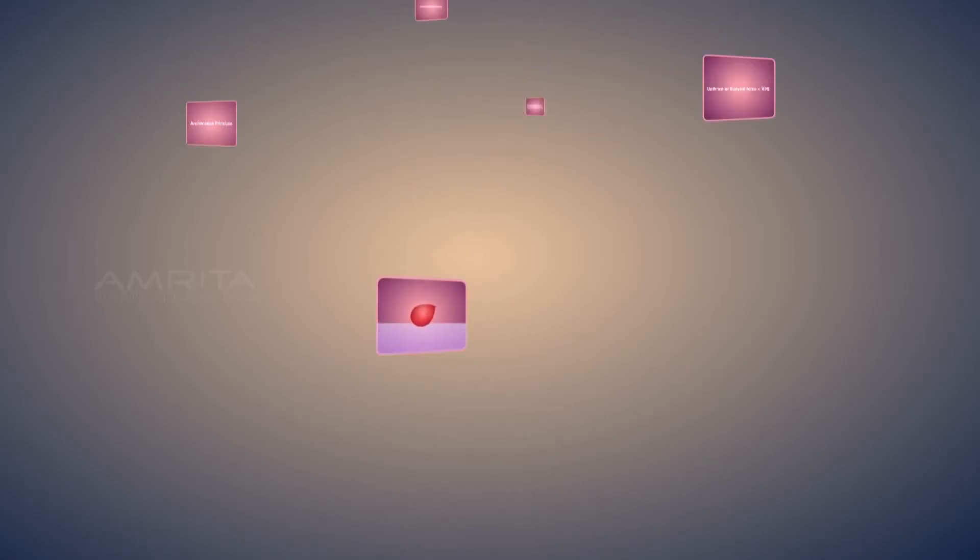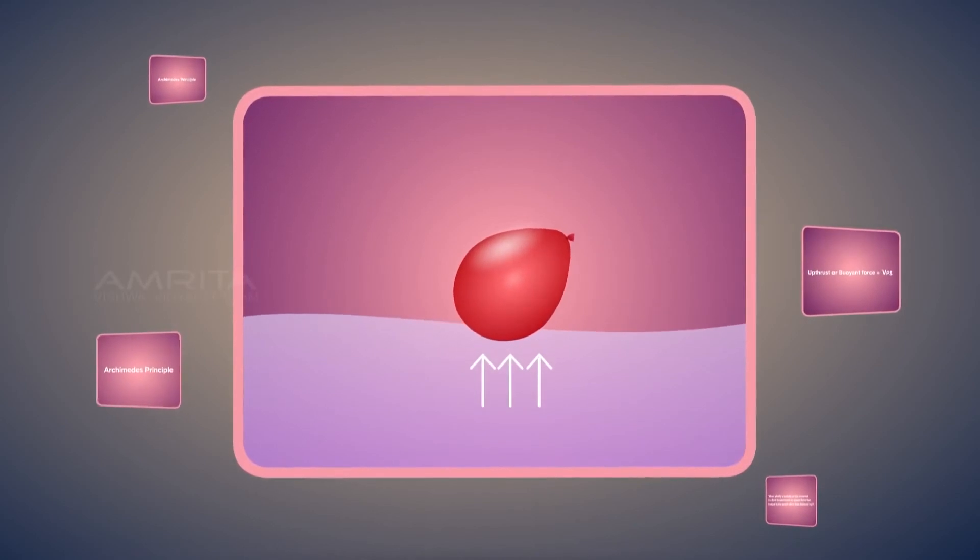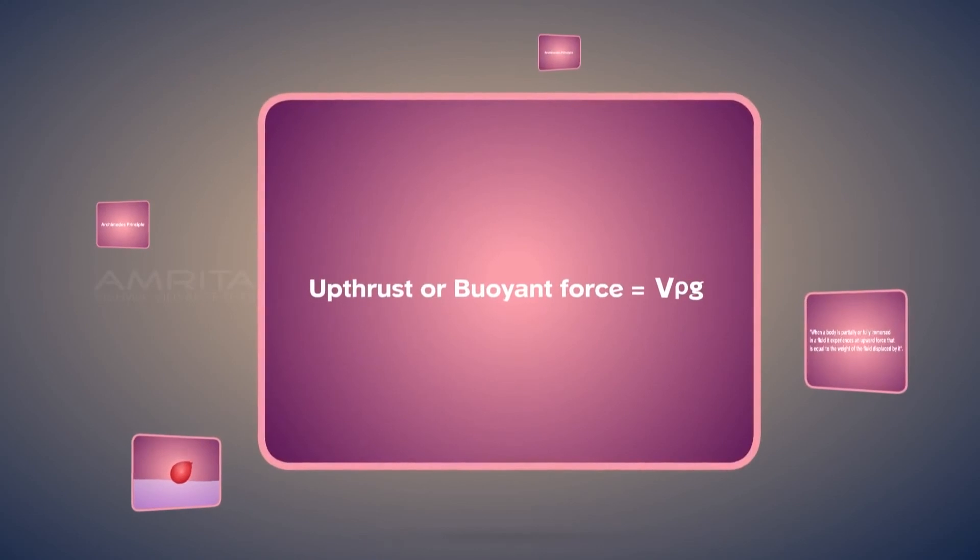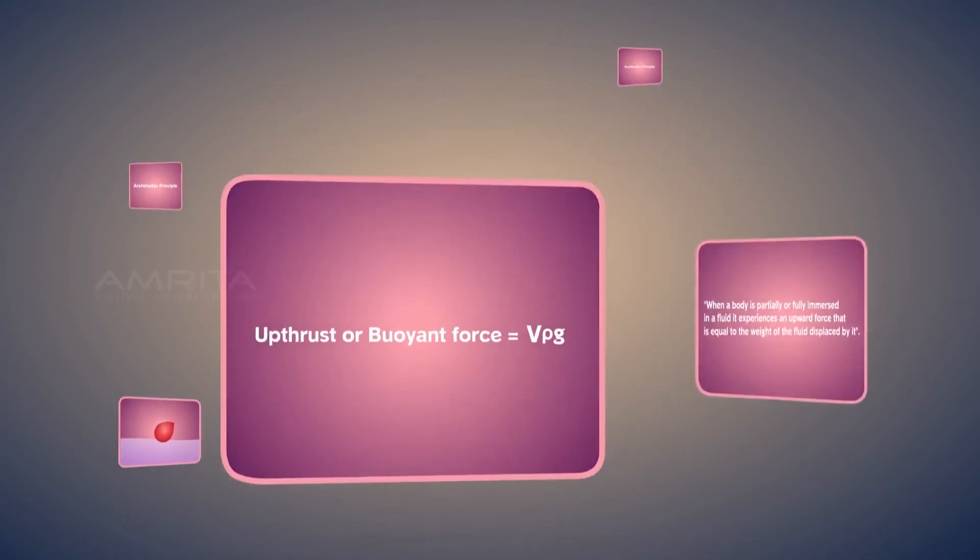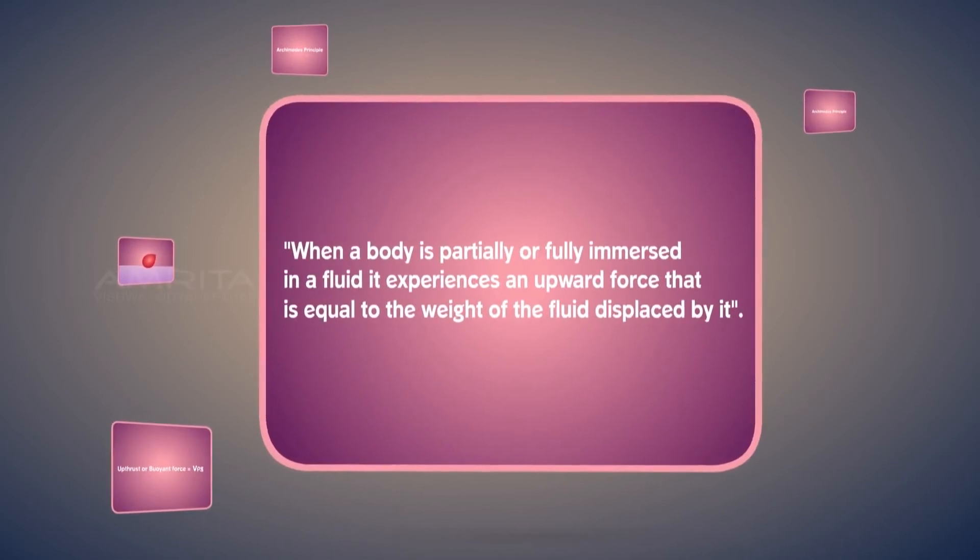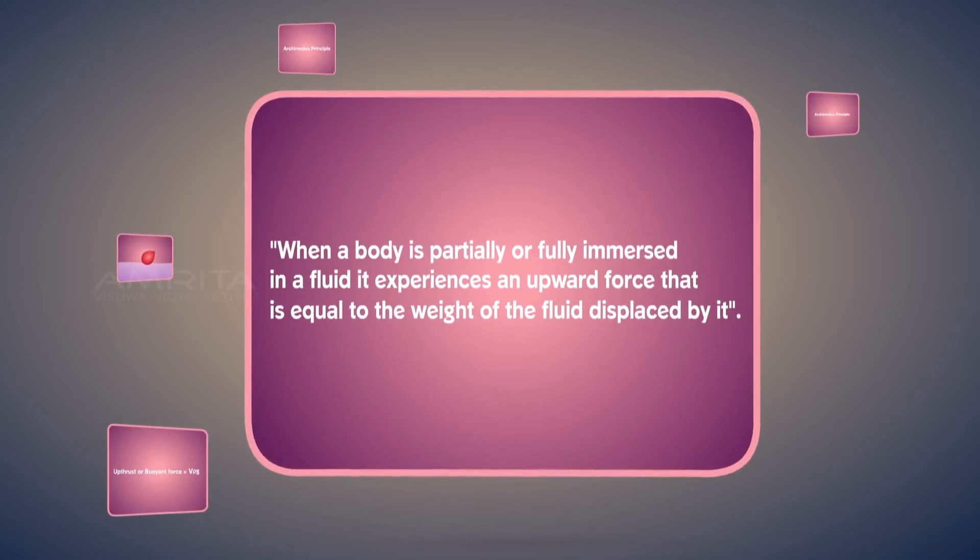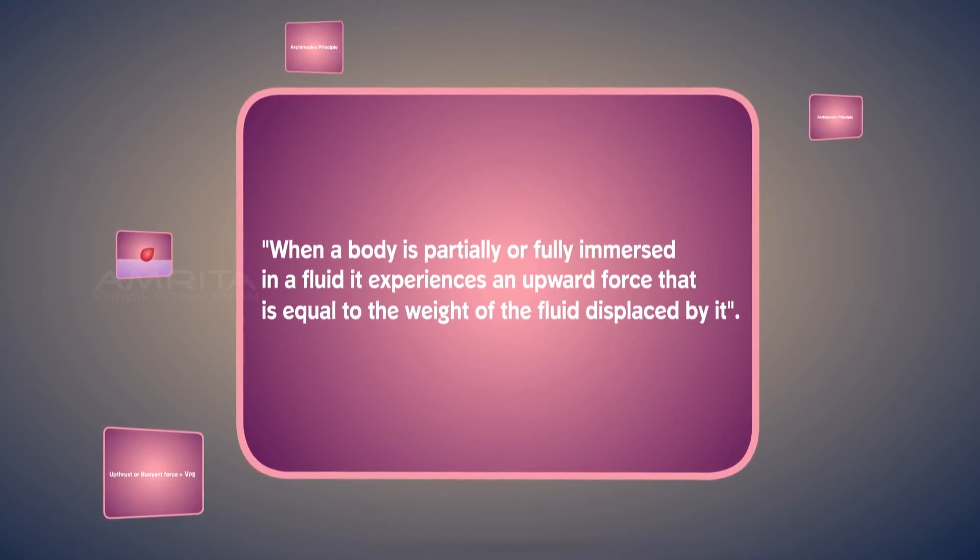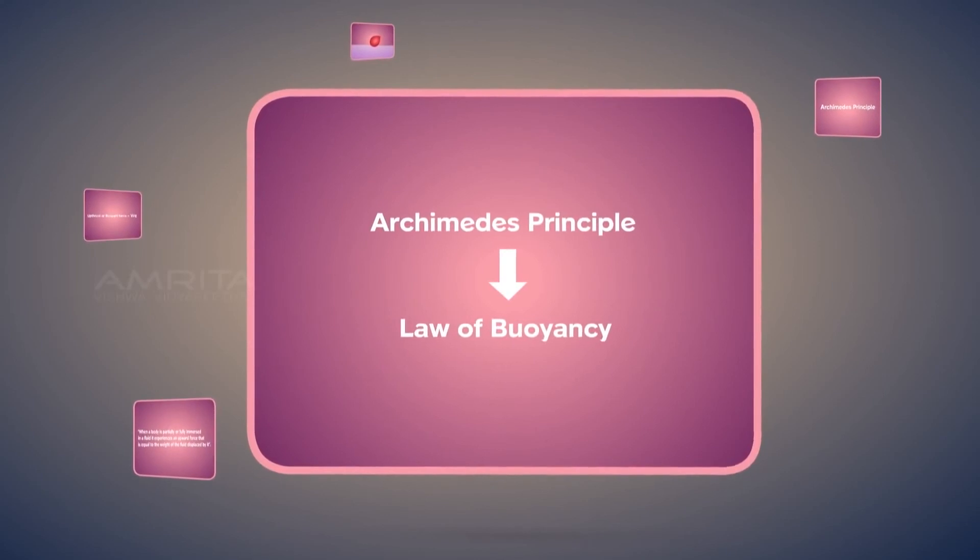Things to remember: The upward force exerted by a fluid is called upthrust or buoyant force. Upthrust or buoyant force equals V rho G. Archimedes principle states that when a body is partially or fully immersed in a fluid, it experiences an upward force that is equal to the weight of the fluid displaced by it. Archimedes principle is also known as the law of buoyancy.